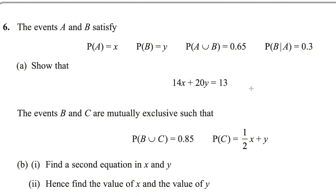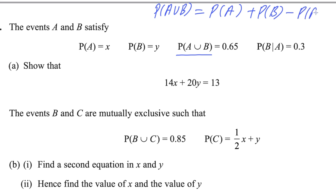This is all three marks. First part — let me write the formula for you. Probability of A union B equals probability of A plus probability of B minus probability of A intersection B. This is the standard formula if the events are not mutually exclusive. If they are mutually exclusive, then A intersection B is 0.